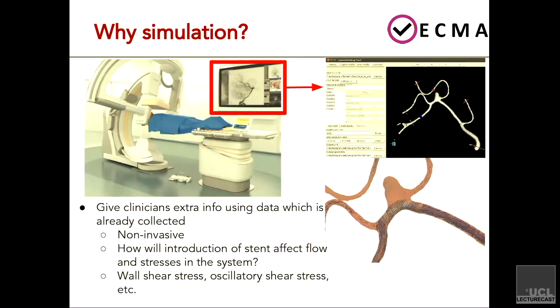Why do we use simulation? Basically, we already have pretty much all the data that we need. When interventional radiologists, for example, are operating — inserting flow-diverting stents to the aneurysm — they already perform CT scans and so on, from which these 3D geometries can be created.